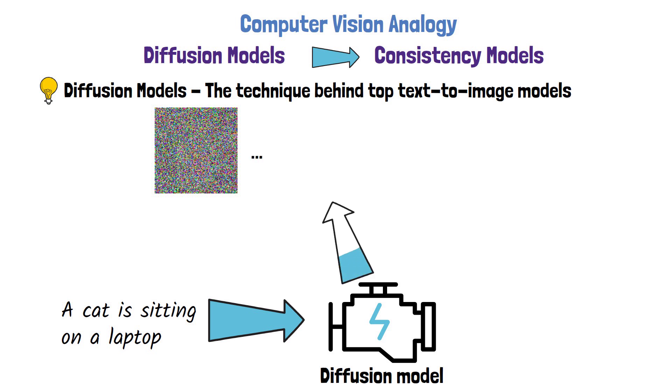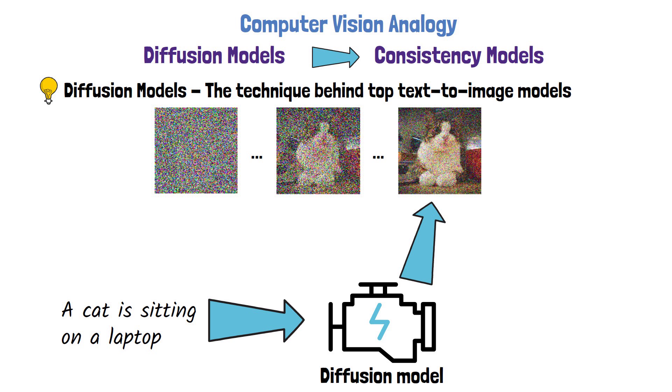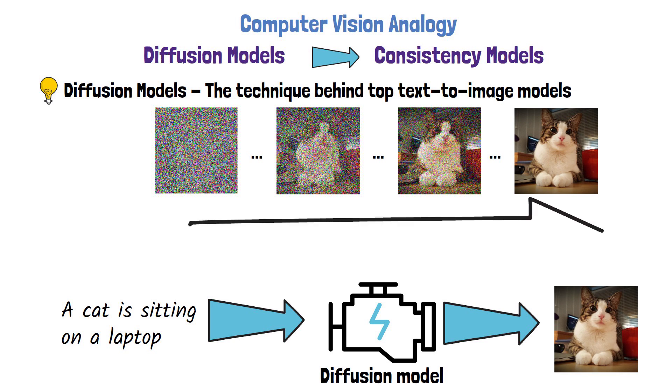The model starts with a random noise image like we have here on the left, and in each step it removes some of the noise. The noise removal is conditioned on the input prompt, so we'll end with an image that matches the prompt. Three dots imply that we skipped steps in this example. Finally, we get this nice clear image of a cat, which we take as the final output of the diffusion model for the provided prompt.